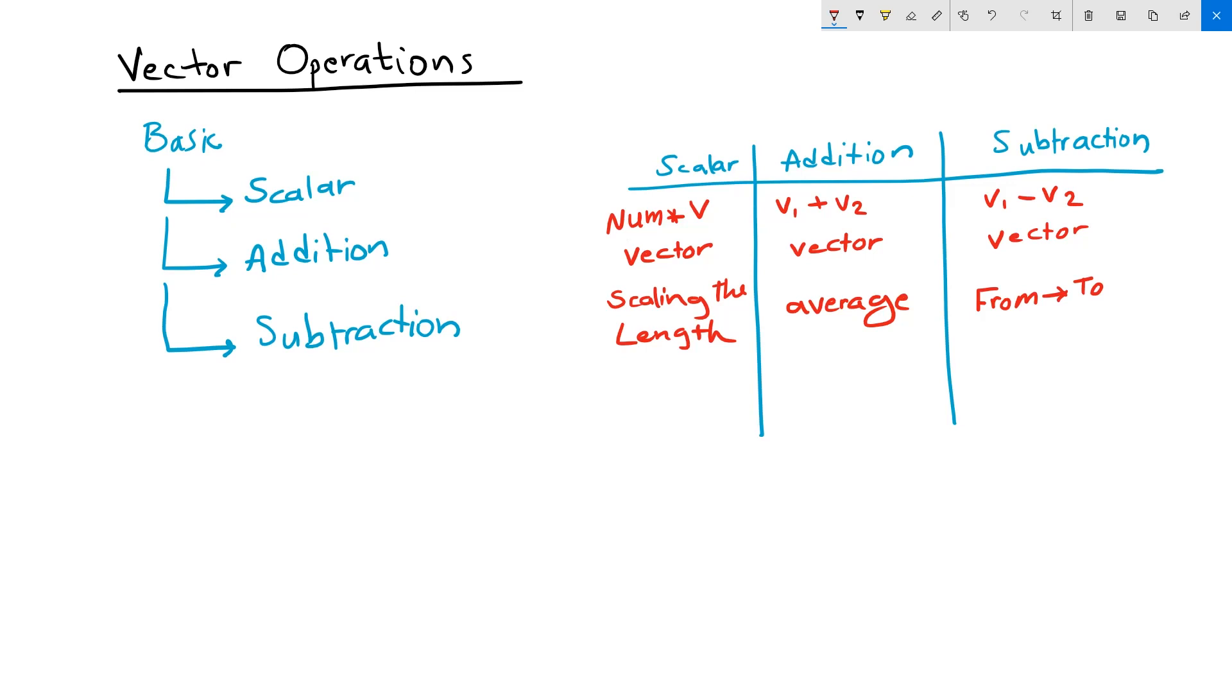The order of operation in the scalar vector does not matter. The order of operations in addition does not matter. But the order of operations in subtraction does matter.